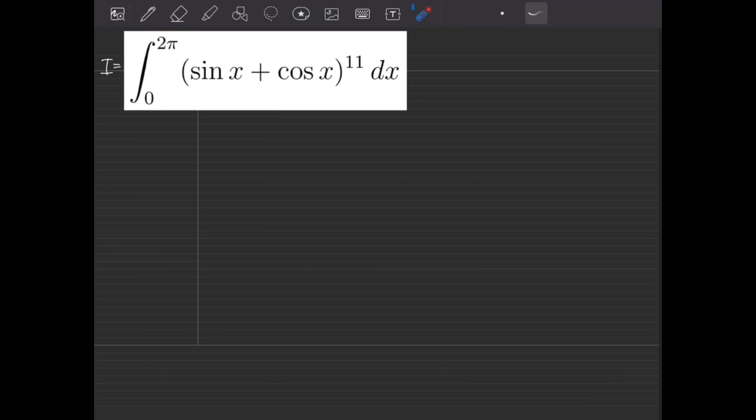So probably the first idea when you see this question is to take our bracket and expand it. That will give us a series of sines and cosines all added together and we could solve each one of those individually using by parts.